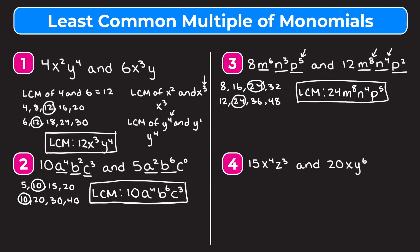Finally, example 4 — pause the video and try this one on your own, then watch me work through it to check. First, let's write down some multiples of 15 and 20. Multiples of 15: 15, 30, 45, 60, 75; multiples of 20: 20, 40, 60, 80. They both share 60 as the smallest common multiple, so our LCM will have a 60 in the front.